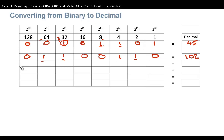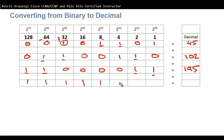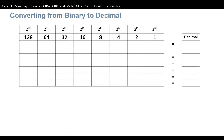One more example: 11000011. Ignore zeros — this bit represents 128, this one represents 64, so 128 + 64 = 192. This bit represents 2, so 194, and this one represents 1, giving 195. The minimum is all zeros, which equals 0, and all ones gives 128+64+32+16+8+4+2+1 = 255. So an 8-bit octet ranges from 0 to 255.